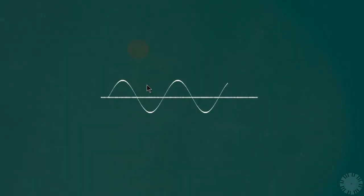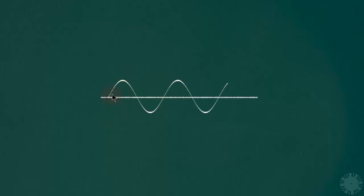In this video on understanding waveforms, we'll try to understand how sound is represented as a waveform on paper or on a computer screen. This is important because when you are producing audio digitally — recording and editing sound — you cannot see the sound itself. What you can see is the waveform. What you see in front of you is a very simple waveform called a sine wave, and we'll try to understand how a sound vibration translates into a waveform like this.